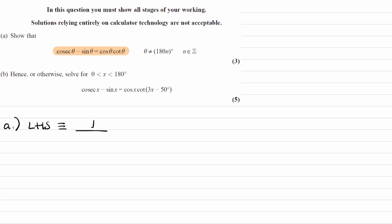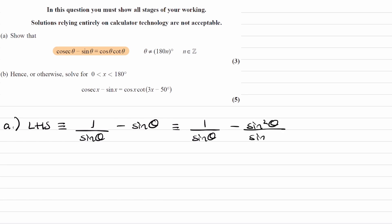Cosec theta is 1 over sine theta. Whenever we have fractions added or subtracted together, we want to generally combine them. So let's make a common denominator — that will be sine theta in this case. So the minus sine theta now becomes minus sine squared theta over sine theta.